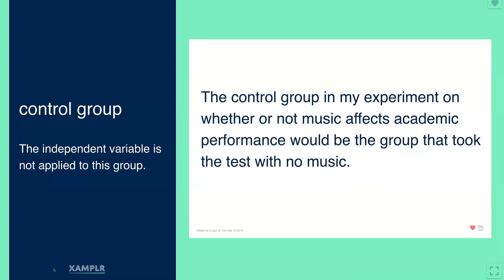The control group in an experiment on whether or not music affects academic performance would be the group that took the test with no music. So the experimental group is taking a test with music, and you measure the difference between the groups.